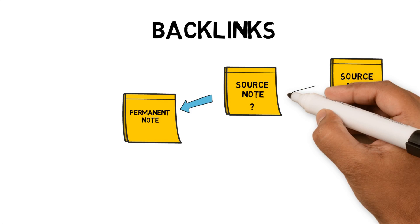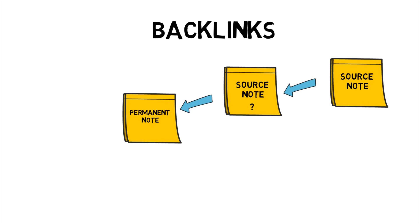I sometimes found that as I worked through a permanent note and re-read the source notes I may have further questions that I need to research. When I complete the research I create a new source note and I add a backlink to the question on that source note. So even though each source note came from a different place, I can see how they relate to each other. What this allows me to do is the next time I create a permanent note, I can see the link between each source note.